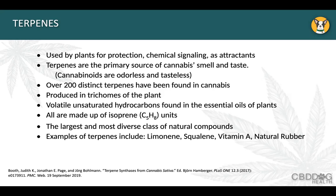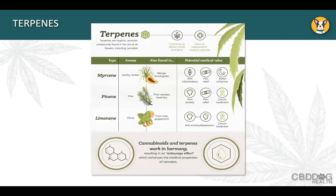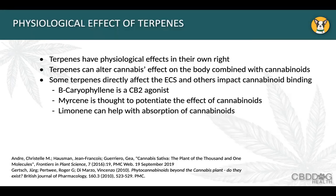Some familiar terpenes include limonene, which is super common; pinene, found in pine needles and rosemary; and myrcene, also found in mango and lemongrass, which is the one that makes you sleepy. Different terpenes have different effects within the body — an essential oil of lemon is refreshing and opens your mind back up, while rosemary and pine can be very calming. These terpenes have their own physiological effects within the body.